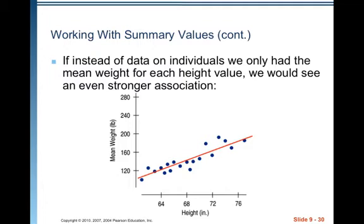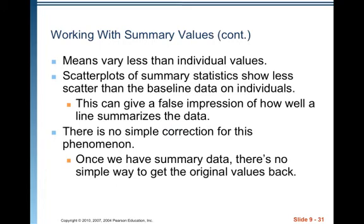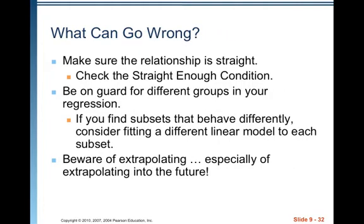So, what you don't want to do is take what you see here with averages and then go back and try to apply it to individuals. That's not fair. It doesn't account for the fact that individuals have much greater variability. Means vary less than individual values, like I've talked about before. Scatter plots and summary statistics show less scatter than the baseline data on individuals. This can give a false impression of how well a line summarizes the data. It's summarizing summaries. And so, that's a whole different thing than summarizing individual observations. There is no simple correction for this phenomenon. Once we have summary data, there's no simple way to get the original values back.